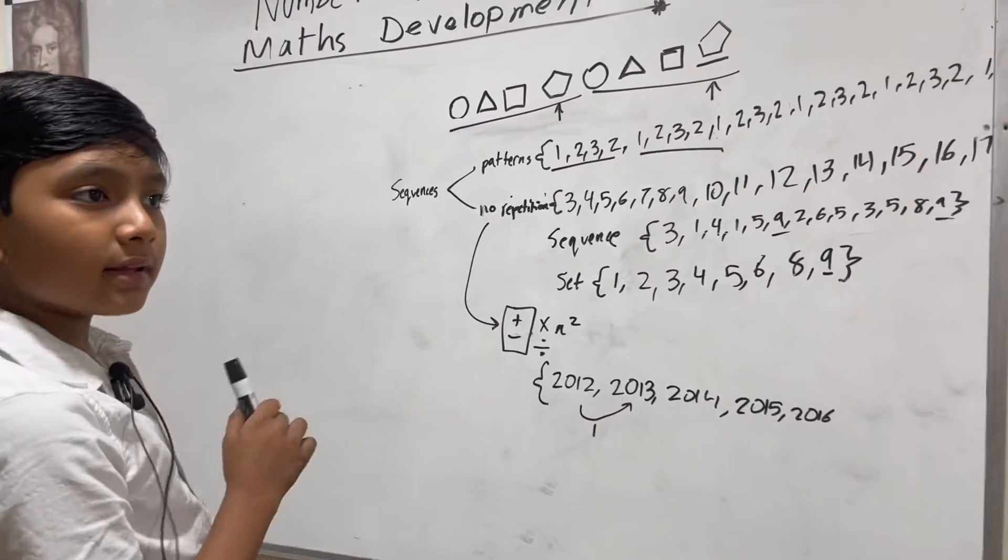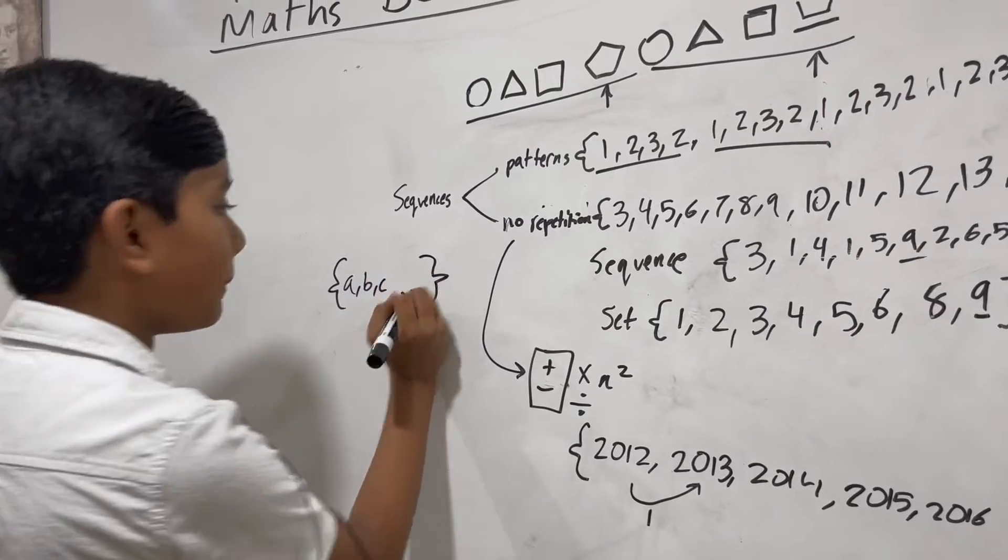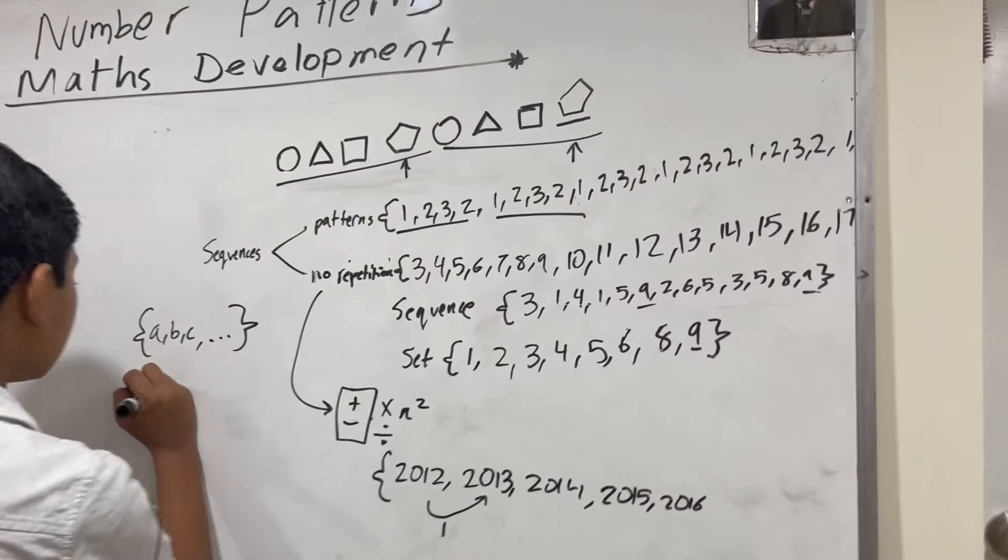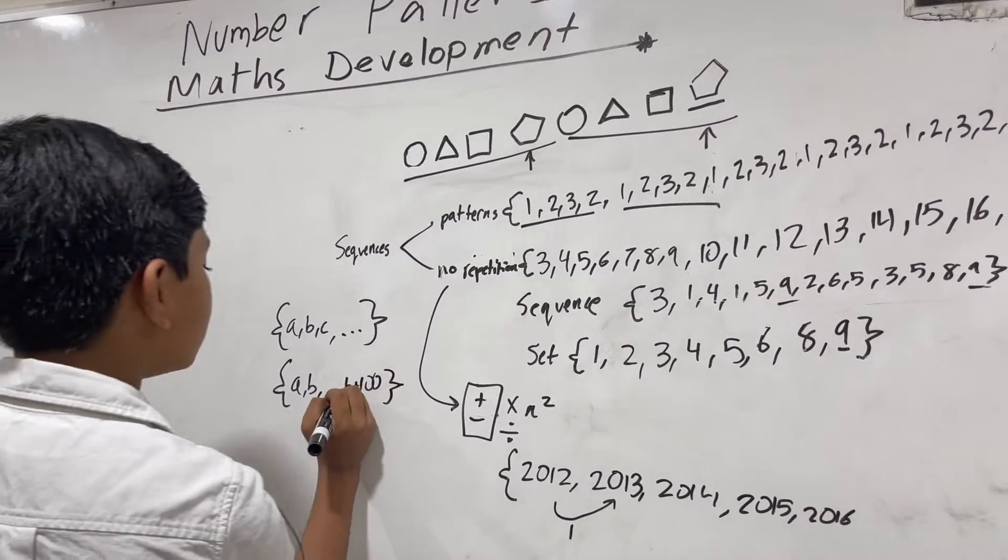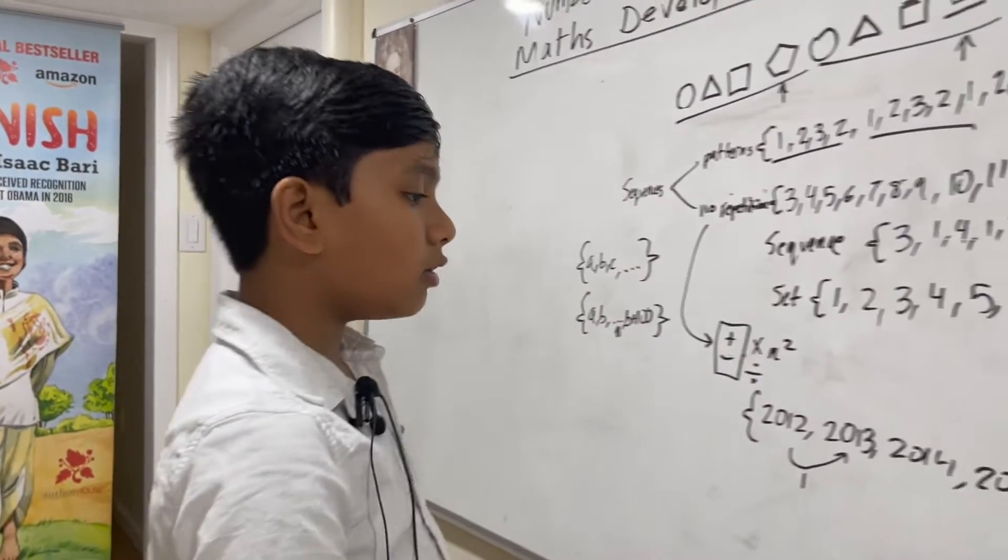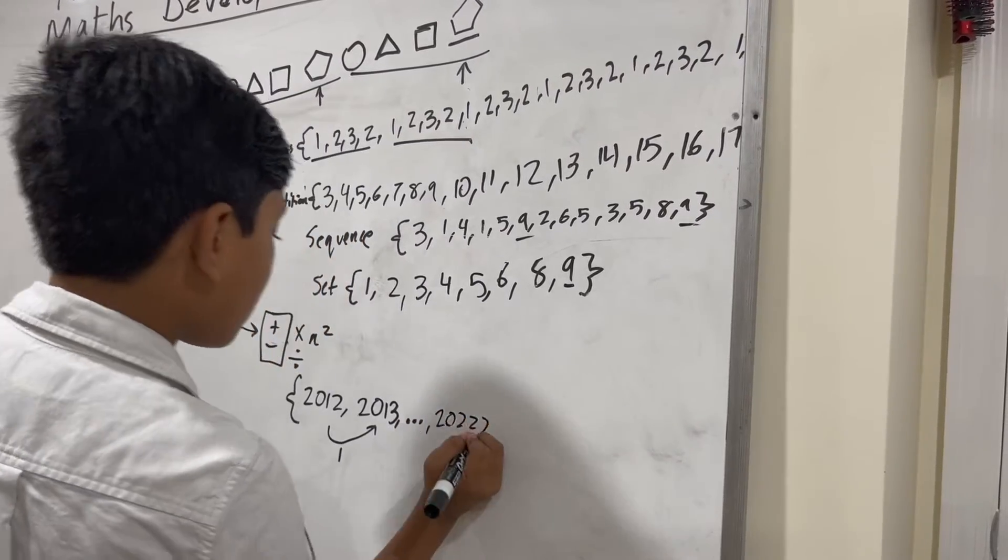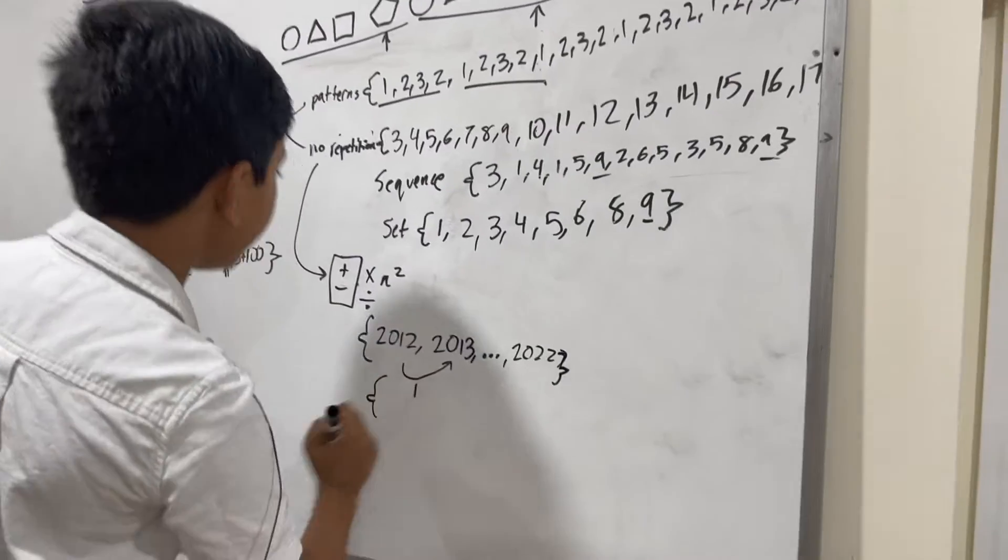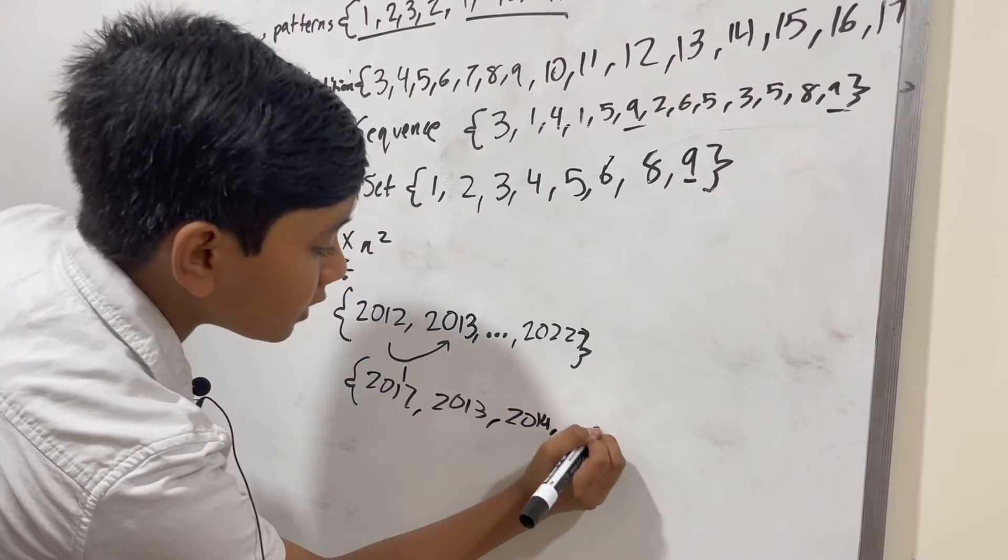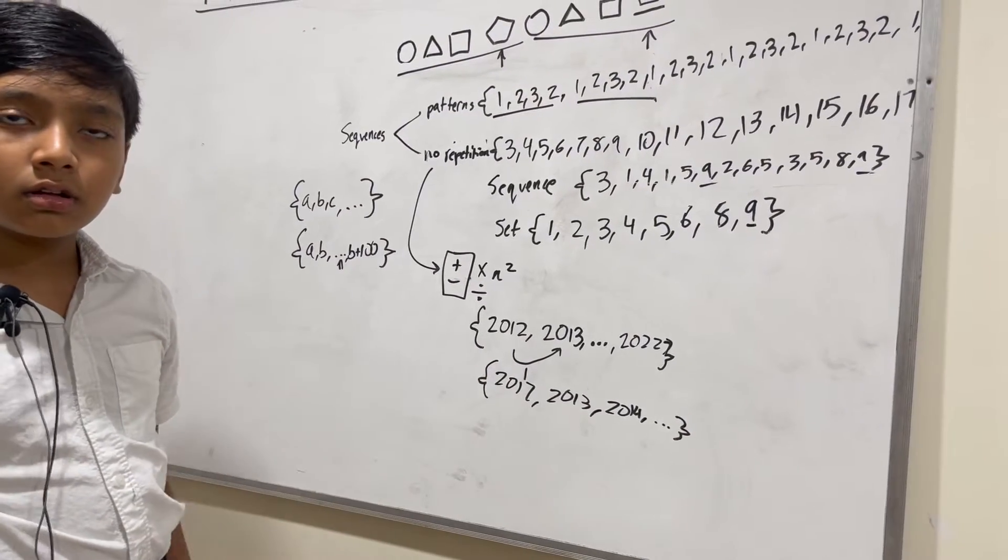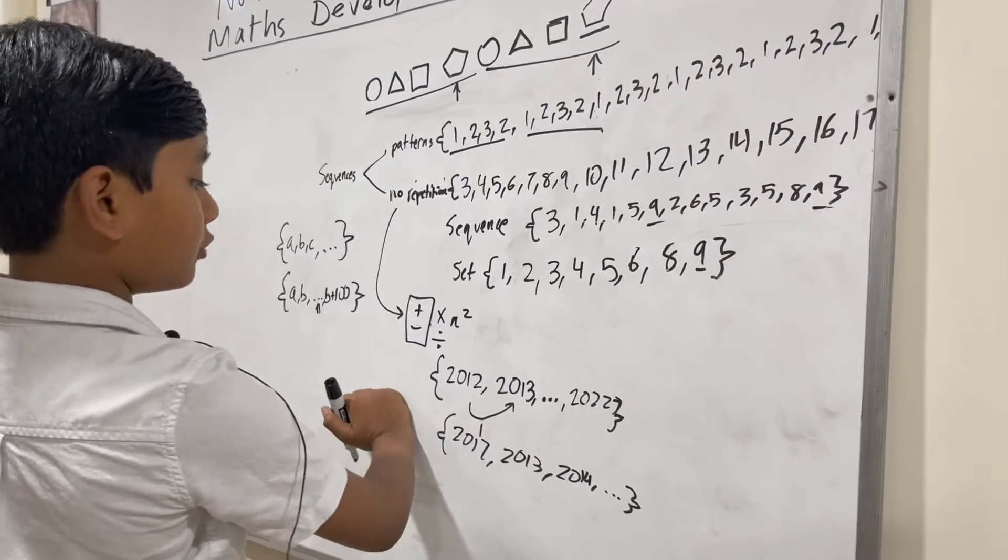But of course, we can't keep writing infinite digits. So instead, to represent that something is infinite, if a set is infinite, we will use an ellipsis - three dots. You can also use this in a finite sequence to signify a really long space. So that is how you represent infinity here.